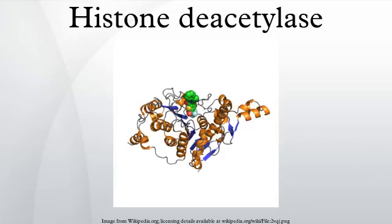Histone deacetylase is involved in a series of pathways within the living system. According to the Kyoto Encyclopedia of Genes and Genomes, these include environmental information processing and signal transduction (Notch signaling pathway, path:co04330), cellular processes such as cell growth and death (cell cycle path:co04110), and human diseases including cancers such as chronic myeloid leukemia (path:co05220). Histone acetylation plays an important role in the regulation of gene expression: hyperacetylated chromatin is transcriptionally active, and hypoacetylated chromatin is silent.